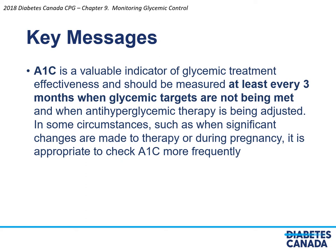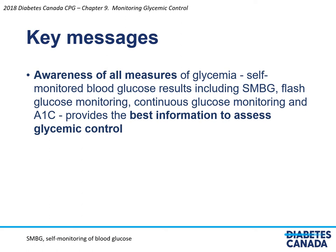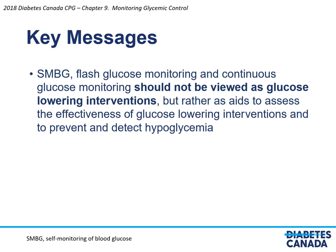The key messages from Chapter 9, Monitoring Glycemic Control, are as follows. A1C is a valuable indicator of glycemic treatment effectiveness and should be measured at least every three months when glycemic targets are not being met and when anti-hyperglycemic therapy is being adjusted. In some circumstances, such as significant changes to therapy or during pregnancy, it is appropriate to check A1C more frequently. Awareness of all measures of glycemia — SMBG, flash glucose monitoring, continuous glucose monitoring, and A1C — provides the best information to assess glycemic control. These monitoring tools should not be viewed as glucose-lowering interventions but rather as aids to assess effectiveness of glucose-lowering interventions and to prevent and detect hypoglycemia.